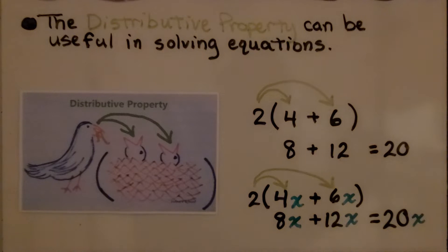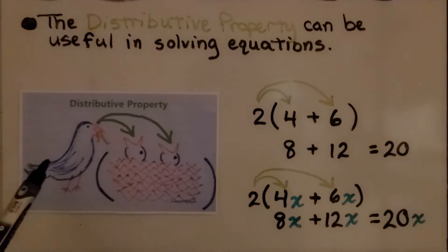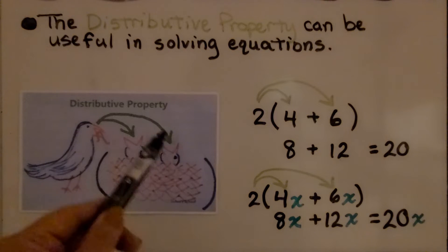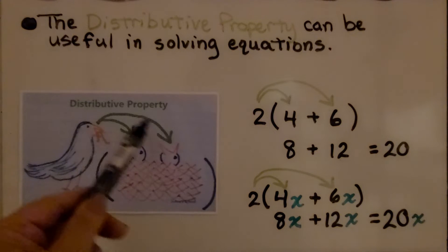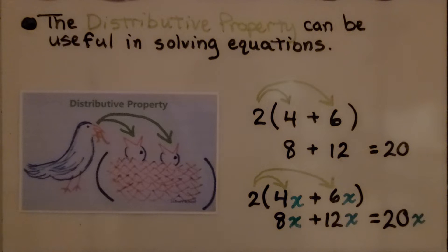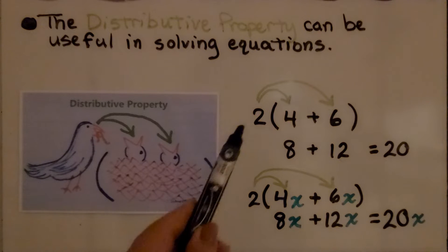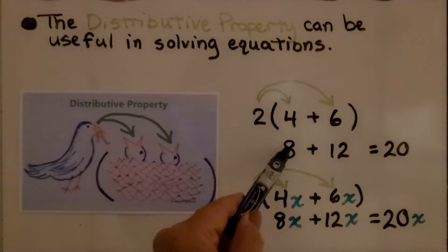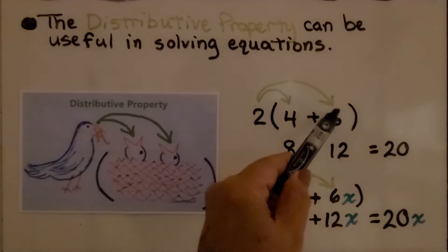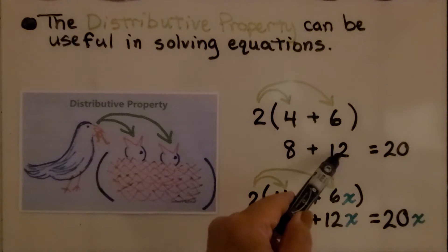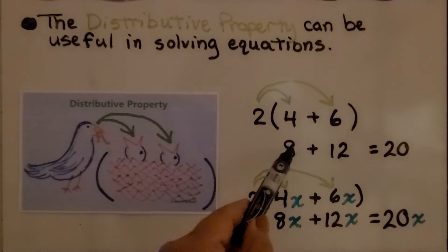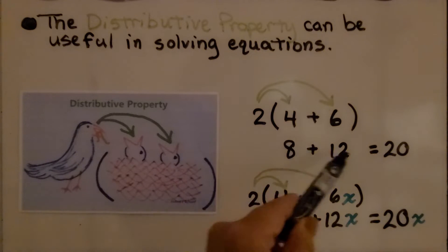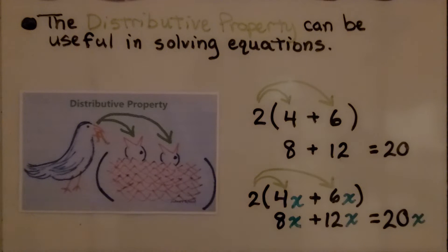My regular subscribers are familiar with this card. The distributive property is like a mother bird feeding each baby in a nest — a parenthesis nest. So we would distribute the 2 to the 4 and multiply it and get an 8. We distribute the 2 to the 6, multiply it and get a 12. We have a plus sign here, so we add them together and get a 20.